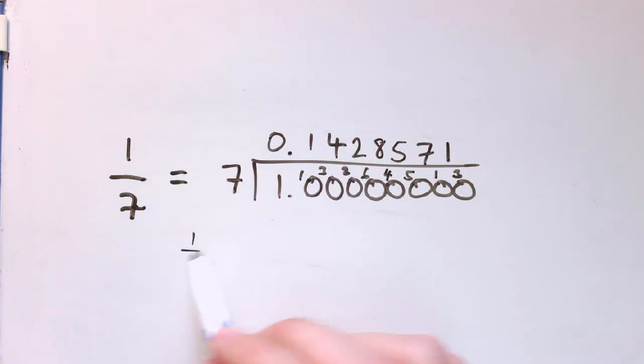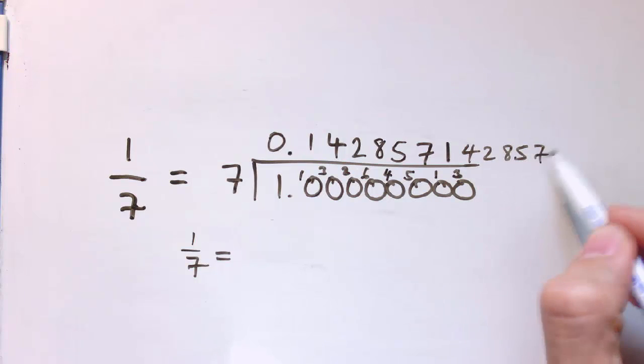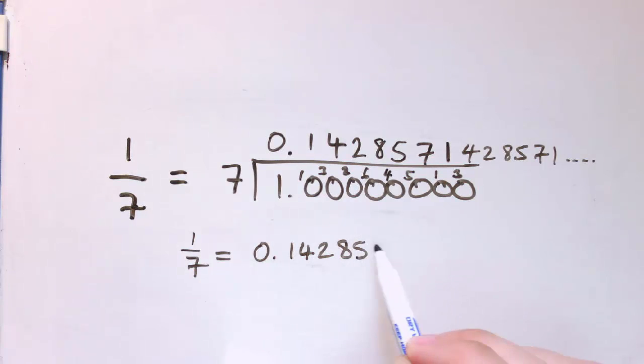So 1 seventh must be all of this, and it will keep repeating. So 1, 4, 2, 8, 5, 7, 1, etc. So I could write that as 0.142857 recurring, and I'll put my dots at the extreme sides here, and that says that whole piece there repeats over and over again.